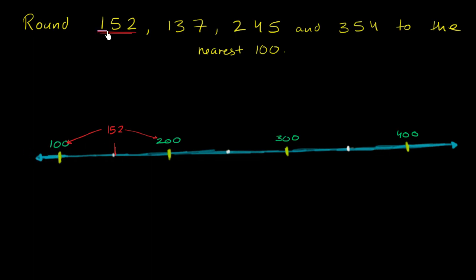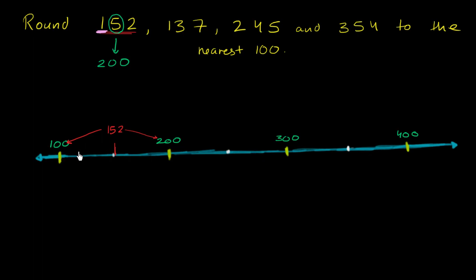If we're rounding to the nearest 100, we want to look one place to the right of that — we want to look at the tens place to decide which multiple of 100 it is closer to. If the tens digit is five or larger, we round up. Here the tens digit is 5 or larger, so we round up to 200. This makes sense: 152 is 48 away from 200 but 52 away from 100, so it's closer to 200.